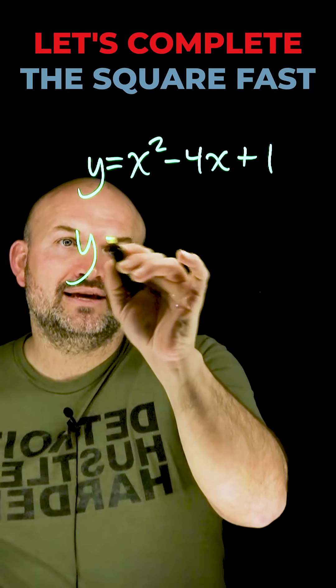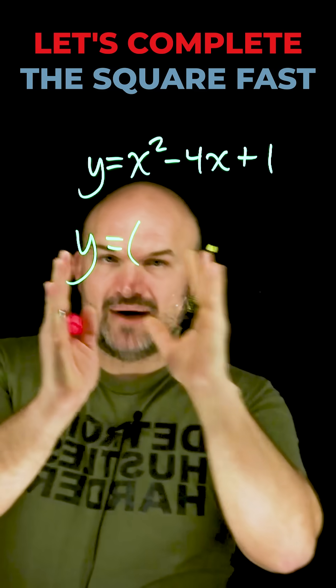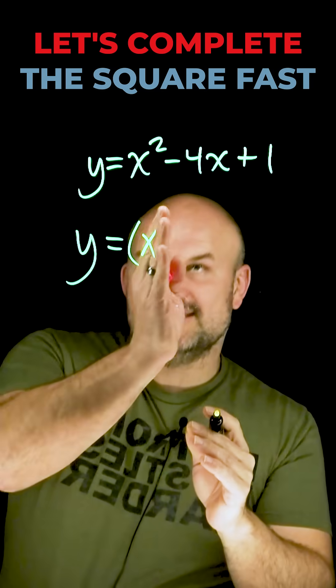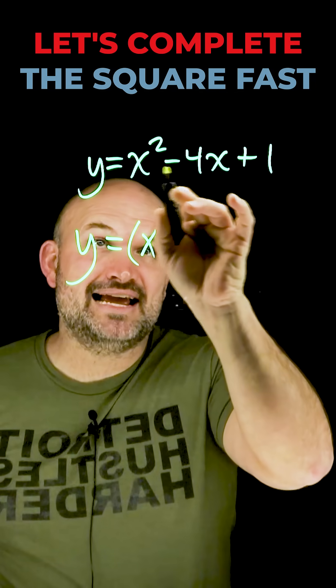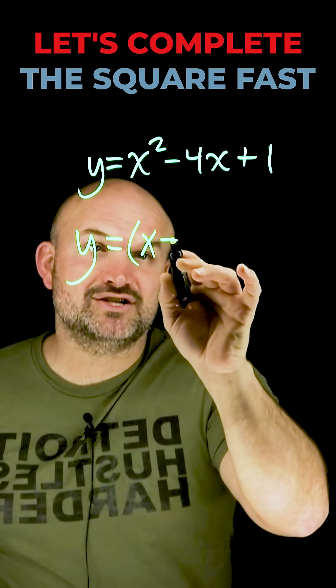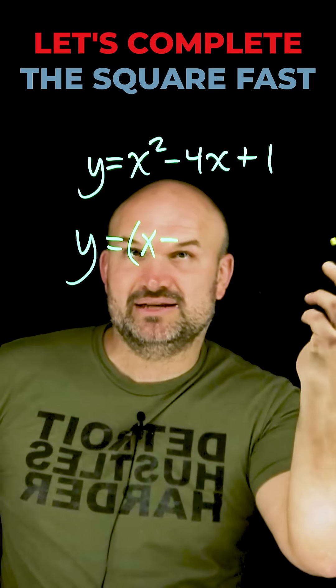All we're simply going to do is create our binomial squared, and we know it's going to be parentheses x. We're going to keep the same term here. So if that's a subtraction, that's a subtraction. If it's addition, you keep it as addition.